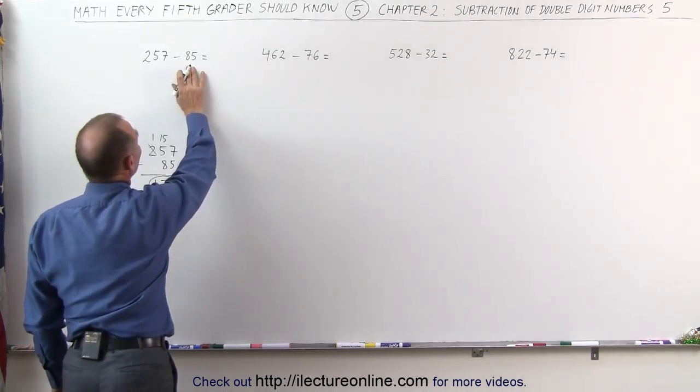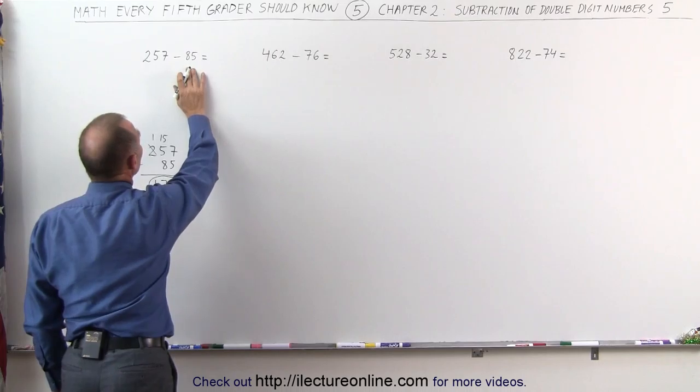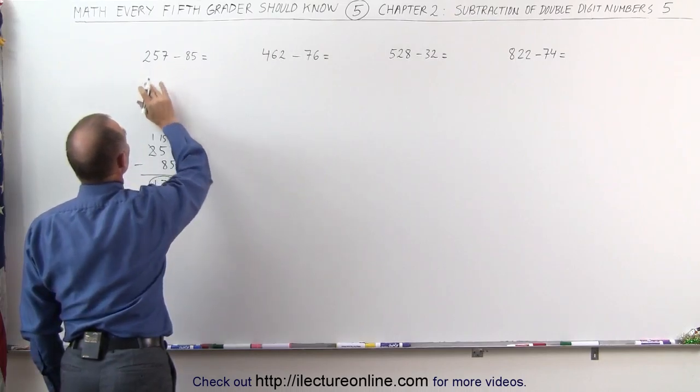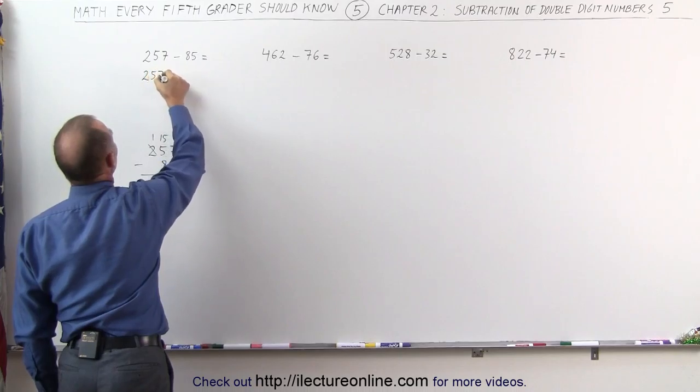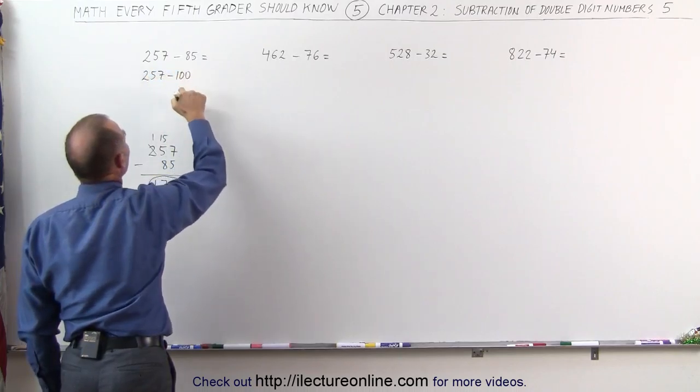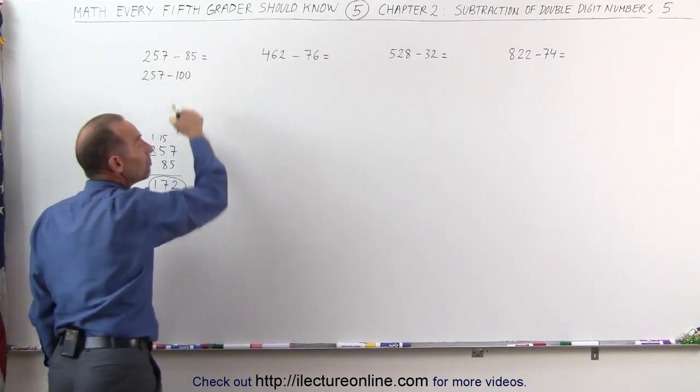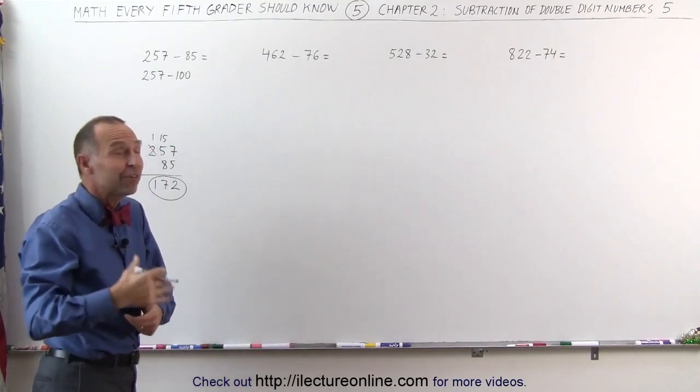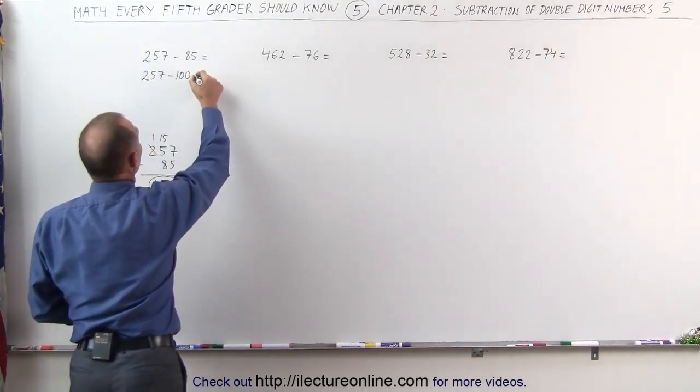85 is 15 less than 100, so what I'm going to do is I'm going to subtract 100 from 257. 257 minus 100, but wait a minute, I'm subtracting 15 more than I should, then I have to add 15 back to that, so plus 15.